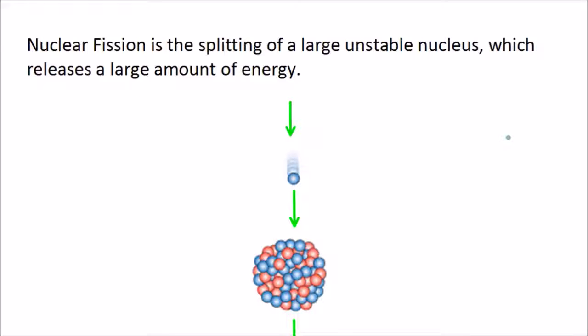Nuclear fission is the splitting of a large unstable nucleus which releases a large amount of energy. Fission doesn't happen spontaneously. Usually we would need to fire a slow-moving neutron into the nucleus to cause fission to happen.